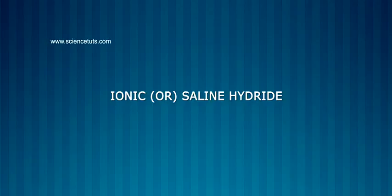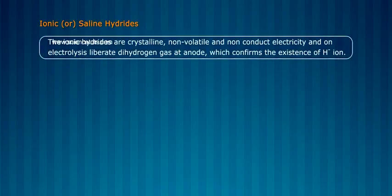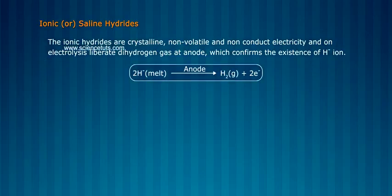Ionic hydrides are crystalline, non-volatile, and do not conduct electricity. On electrolysis, they liberate dihydrogen gas at the anode, which confirms the existence of H⁻ ion.